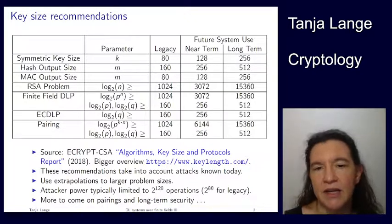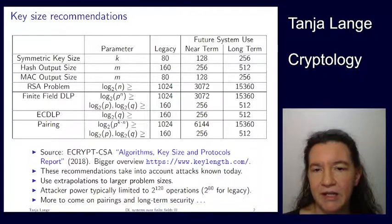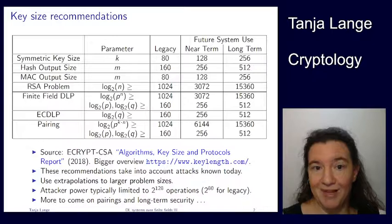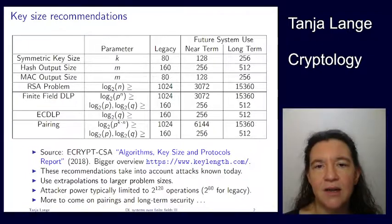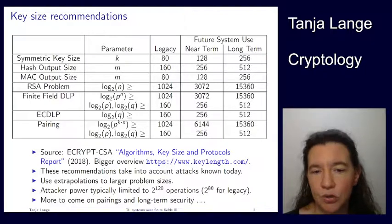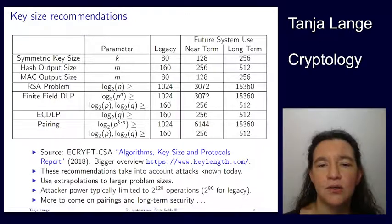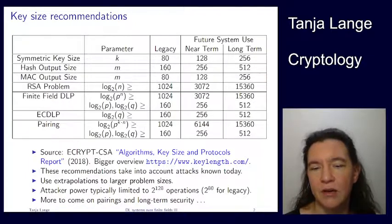We typically assume the attacker has 2^128 operations. This is generous — we don't know any attacker who can do this — but that's exactly what we want: to defend against attackers which are not currently possible. The Legacy column I left in because the report has it, but it assumes 2^80 for the attacker, and 2^80 is doable. So this is not a secure choice. You should not be using systems in that column.